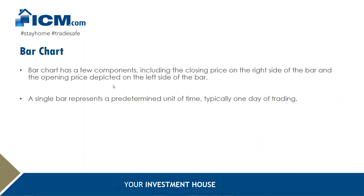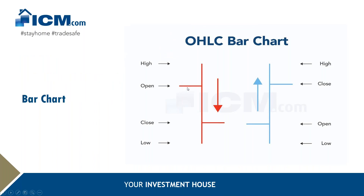The bar chart is more detailed than the line chart since it shows four price components: the open price, high price, low price, and close price within a certain predetermined time frame. The opening price shows as a dash on the left. The top of the bar shows the highest price, the bottom of the bar shows the lowest price, and the dash on the right shows the closing price. For example, if gold started trading at 1740, prices moved higher towards 1750 — marked as the top of the bar — then fell to the low of 1710, marked as the bottom of the bar, and then closed at 1720.